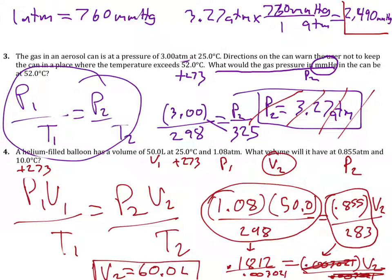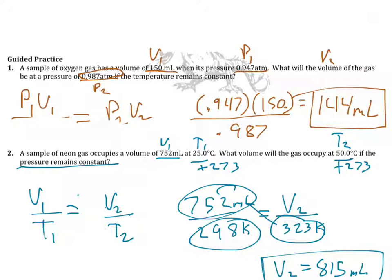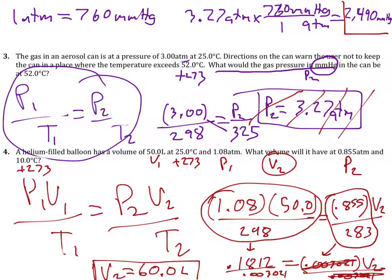To recap: cross out or erase whichever variable you're not dealing with, plug in your numbers, and use basic algebra to solve for the unknown. Use the combined gas law when there is a change in condition — you have an initial and a final state. Next class we'll learn a formula for when there's no change in condition. Do the independent practice problems and make sure you understand the material. Have a great day.